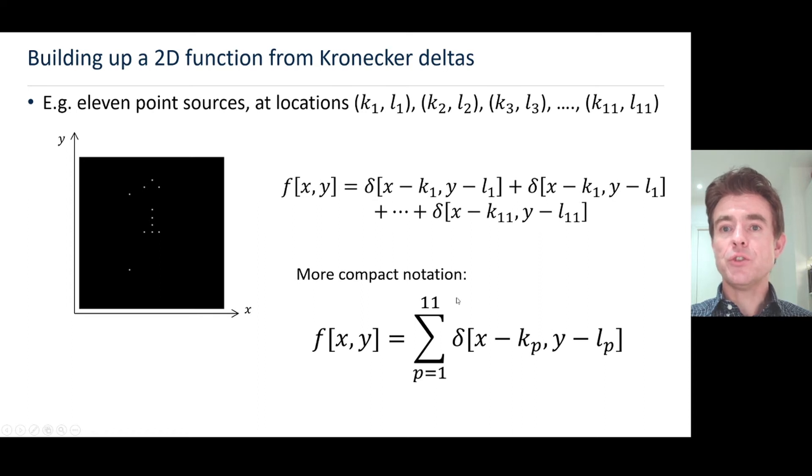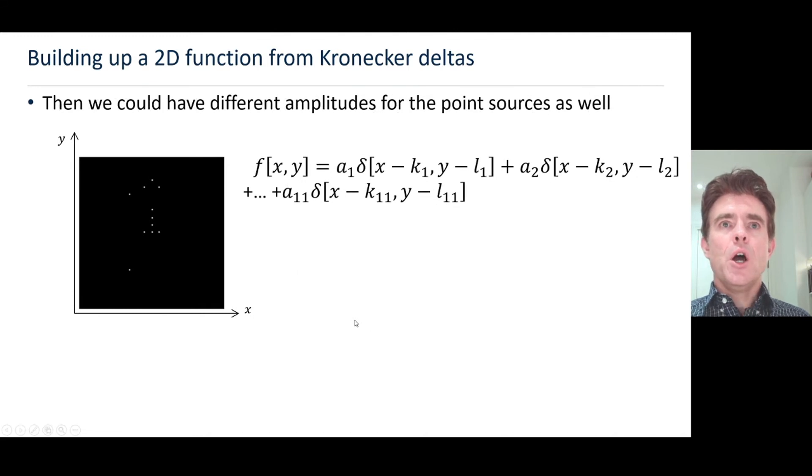Building the complexity further, because obviously black and white images are more than just collections of points, we need to build up the picture more completely. They could have different intensities or amplitudes. Here I've now put in a coefficient a1 for point source 1, coefficient a2 for point source 2, and so on, coefficient a11 for the point source located at x equals k11 and y equals l11.